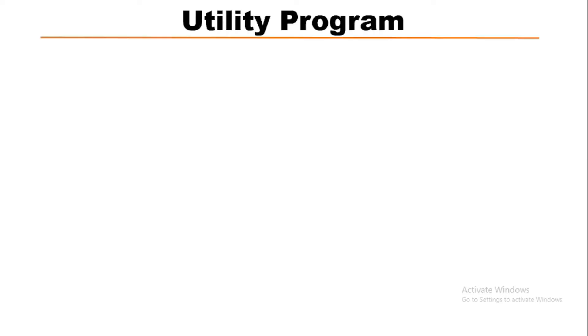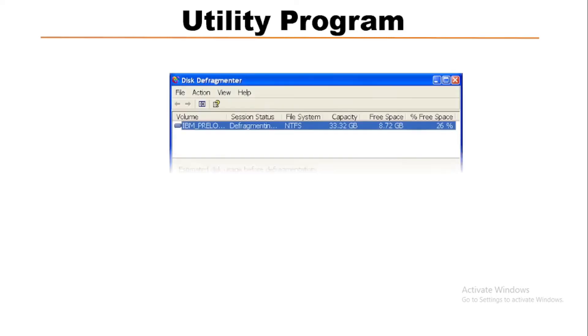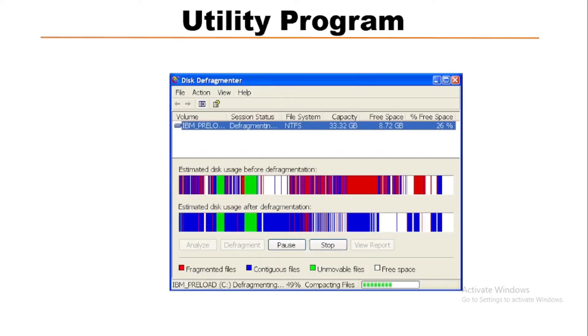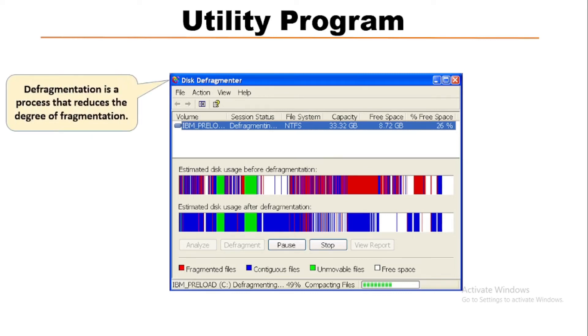In this video we will learn about utility programs. If your computer is running slower than usual, it might be due to fragmentation. Disk defragmentation is a process that reduces the degree of fragmentation. Here the selected disk is the C drive in the computer hard disk.